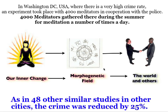Another example that may help us understand this morphogenetic field would be some of the experiments that have taken place through the Transcendental Meditation groups. They gathered in a number of cities throughout the world — one of them Washington D.C., where there's a very high crime rate — and they brought in 4,000 meditators who, in cooperation with the police, did a study.